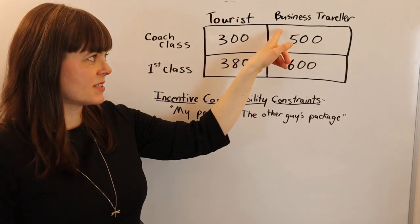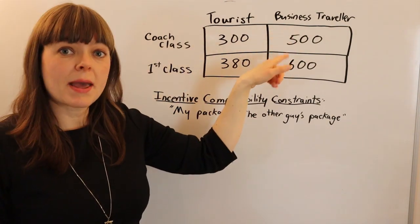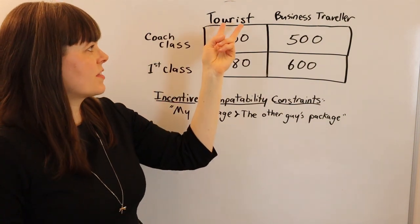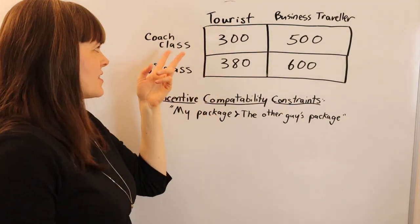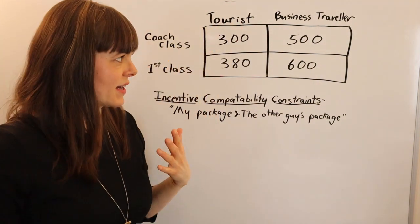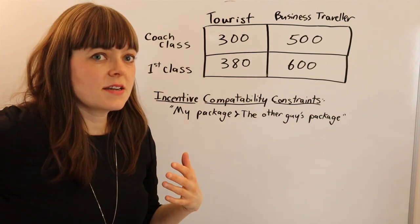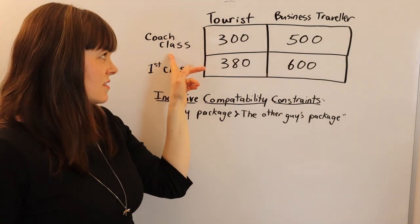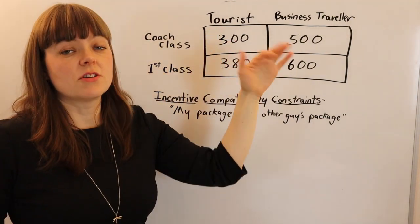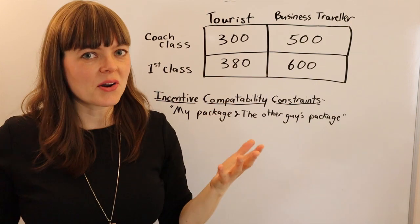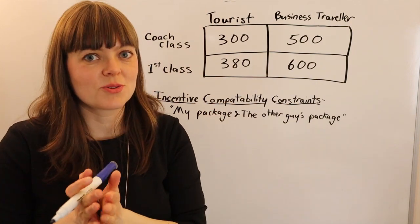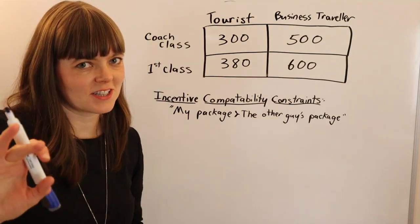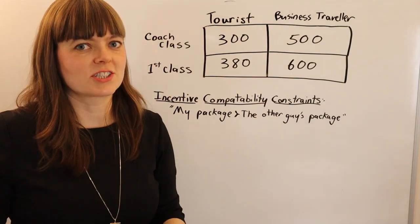What the airline wants is for business travelers, who are willing to pay more for tickets, to sort themselves into first class tickets, and for tourists to sort themselves into coach class tickets. They need to price these such that the business travelers don't choose coach and the tourists don't choose first class. So how do they price to achieve this kind of price discrimination? Let's first remind ourselves of the principal-agent relationship here.